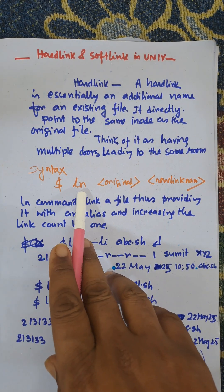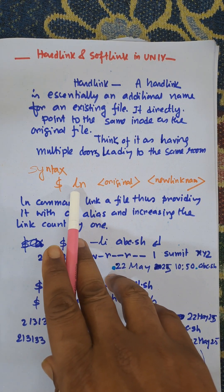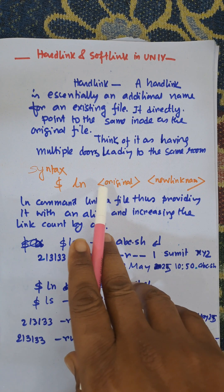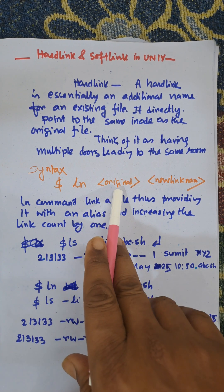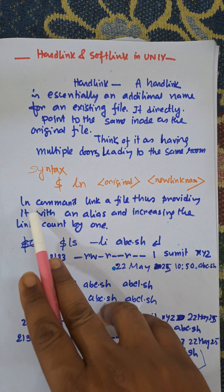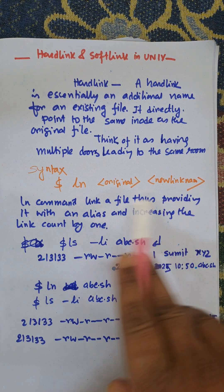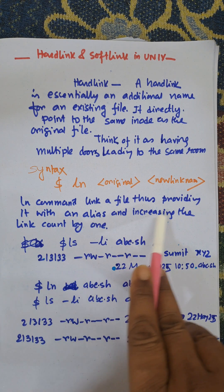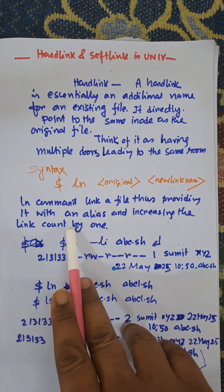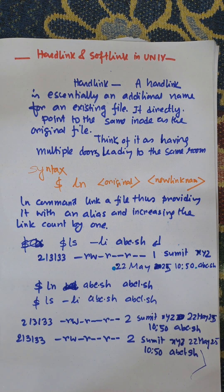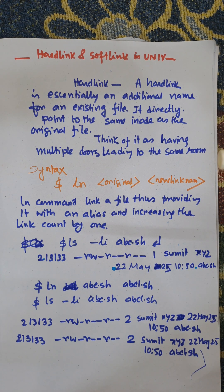Syntax: the ln command. ln is used to link the file — link the original and the new name. The ln command links a file, providing it with an alias and increasing the link count by 1. It will increment the count to 2, so we can easily understand how many files are connected to a filename with the help of the link count.